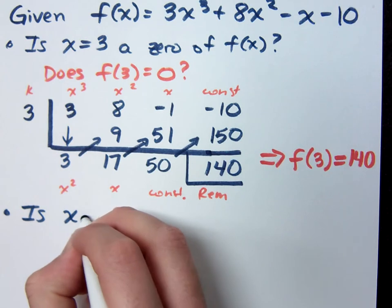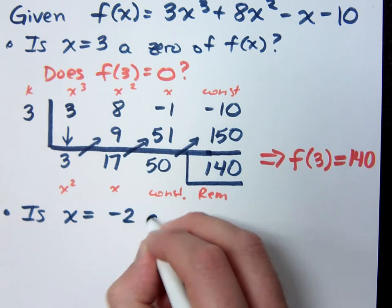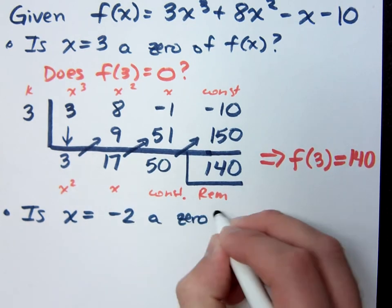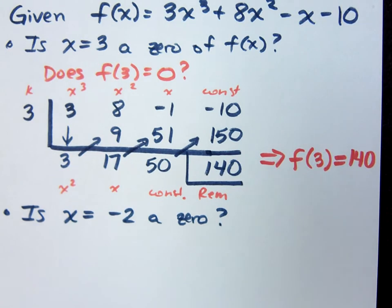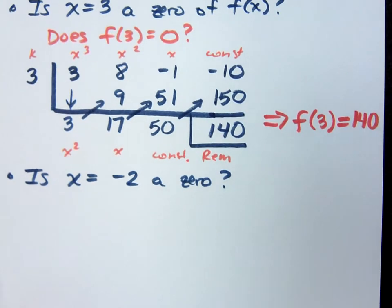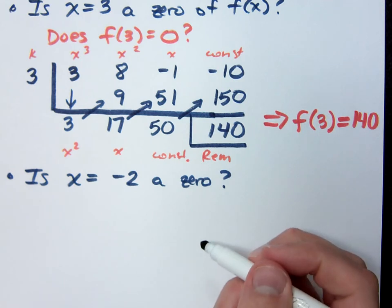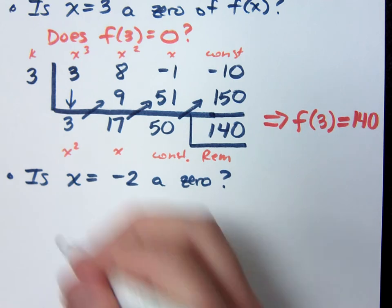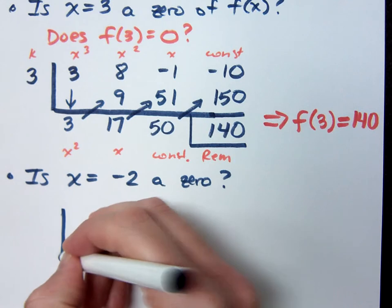So let me ask you this. Is x = -2 a zero? If I do synthetic division with -2, does that work out? So can we write no like you do on a sentence? Just no. You're just going to write no here? With the same equation? Yeah, using the same function.